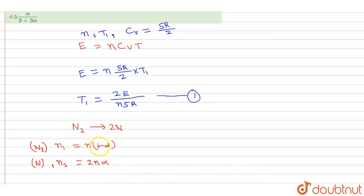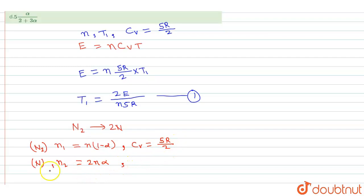N₂ is diatomic, so its Cv = 5R/2. The atomic nitrogen N is monoatomic, so its Cv = 3R/2.